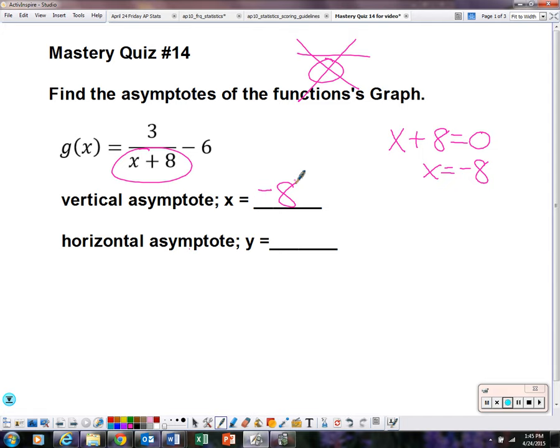In this problem, the horizontal asymptote, you can find it simply by looking at the equation. Look at the format of the equation. 3 over x plus 8 with the minus 6. The minus 6 is your horizontal asymptote. So y equals negative 6. The format is very important in finding these. This one's pretty straightforward.